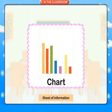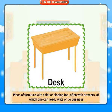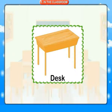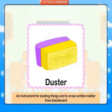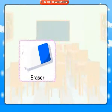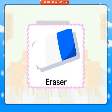Chart: a sheet of information. Desk: a piece of furniture with a flat or sloping top, often with drawers, at which one can read, write or do business. Duster: an instrument for dusting things and to erase written material from blackboard. Eraser: a piece of rubber for removing pencil marks.